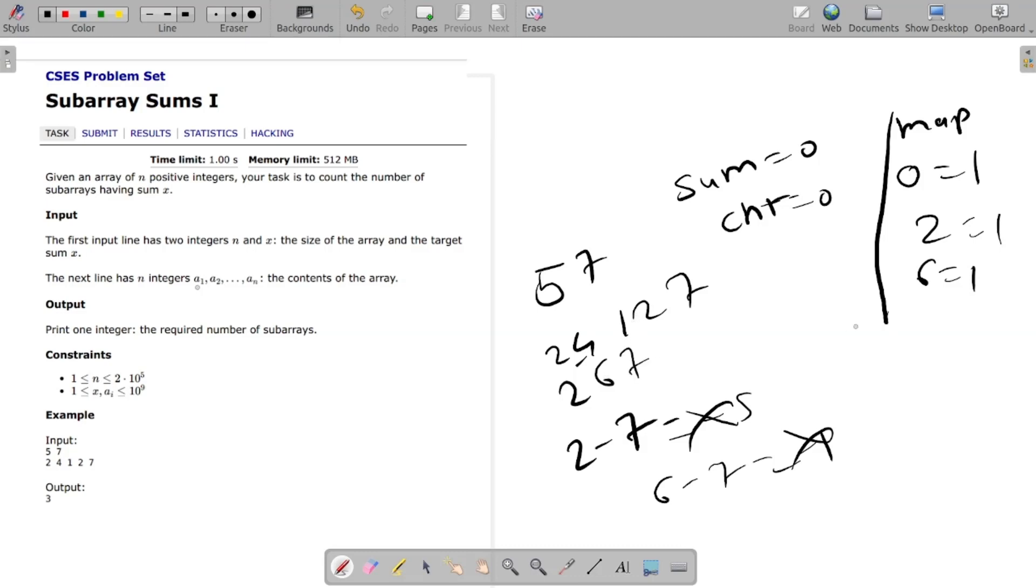So leave it. Then 6 plus 1 is 7, check 7 minus 7 present in map, 0, 0 is present, yes. We will update our count to 1.